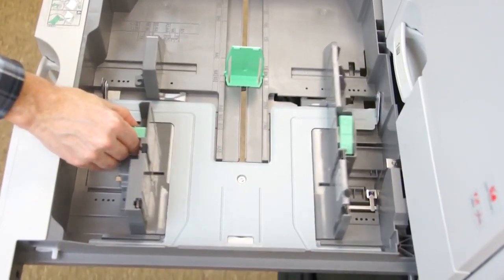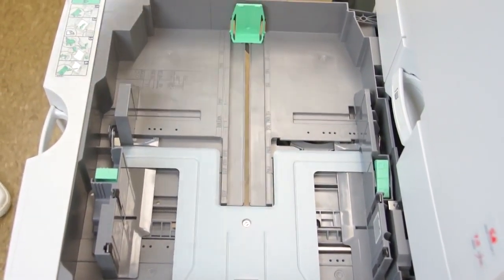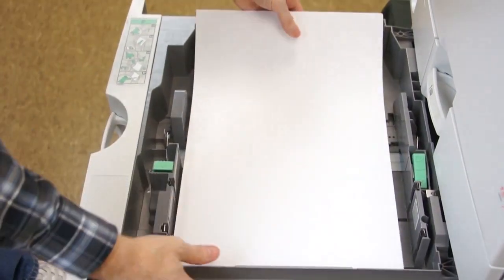To adjust the tray media guides, simply pinch the green clip on the side guide and the end guide. Then slide the guides to match the desired media size.